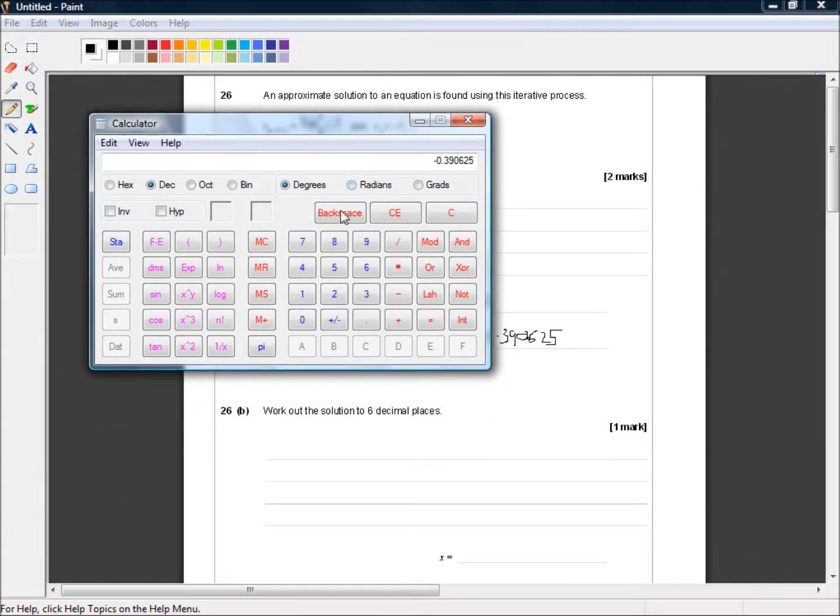Part B, work out the solution to six decimal places. So this is 1, 2, 3, 4, 5. This is correct. Now to get to six decimal places using an iterative process, all you do is keep mindlessly going through the loop until the numbers are the same to the required level of accuracy.